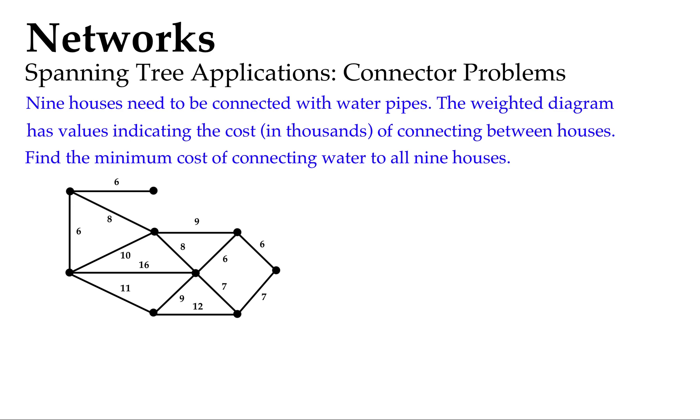Now we don't want to put in any unnecessary water pipes or it's going to cost us a heck of a lot of money. So we're going to use Prim's algorithm to find the minimal spanning tree, which is in effect the minimum distance and the minimum number of pipes we need to use to connect the water to all these houses. Let's go for it.